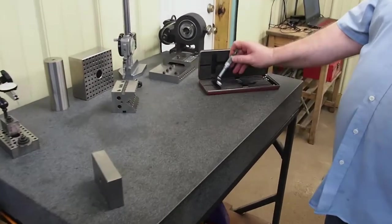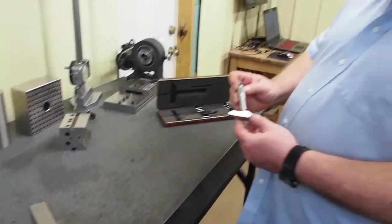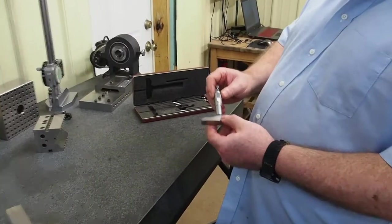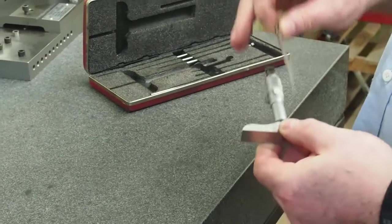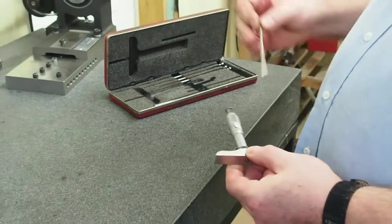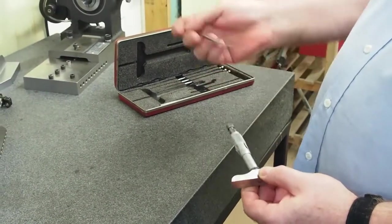We'll start out with your standard depth mic. This I gave to my son, but when I started in the trade, it's a Starrett set. It goes from 0 to 12 inches with these different rods. You can unscrew this, pull one rod out,